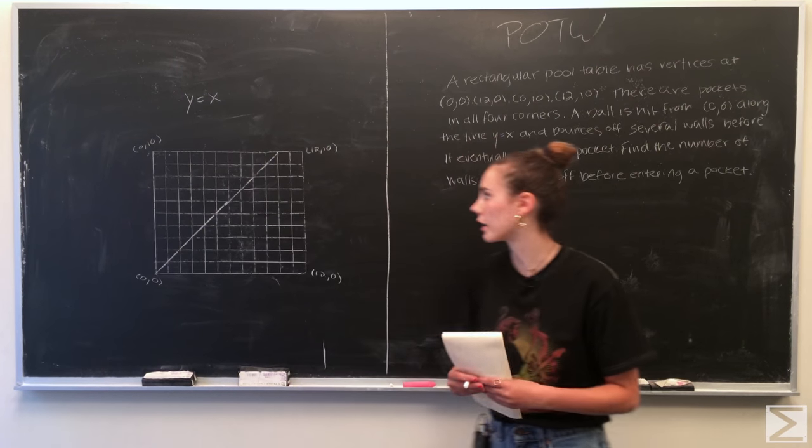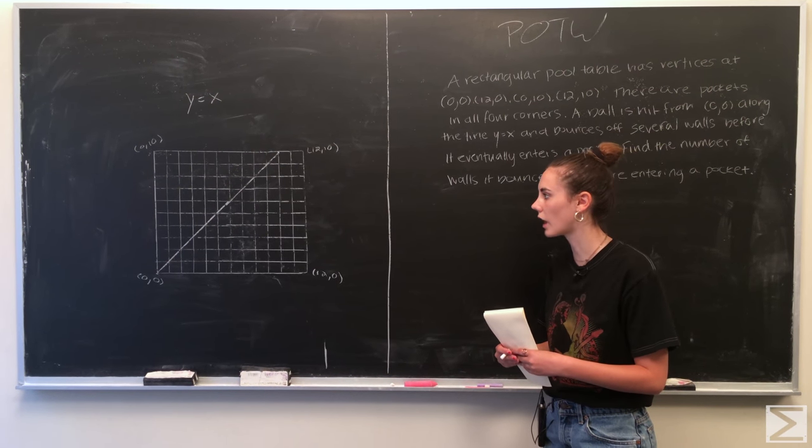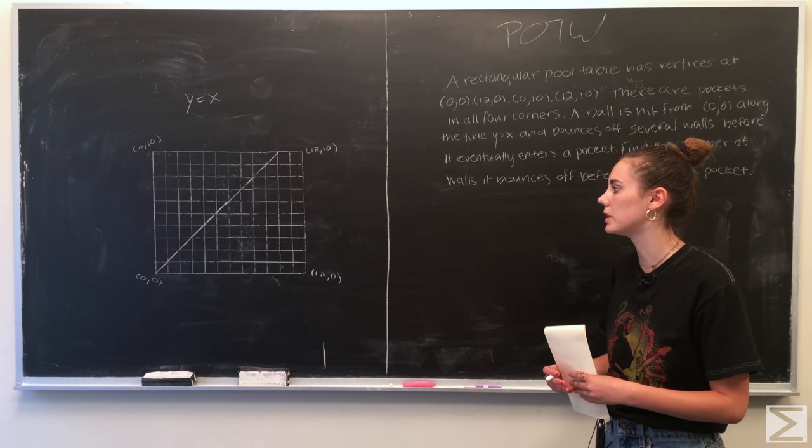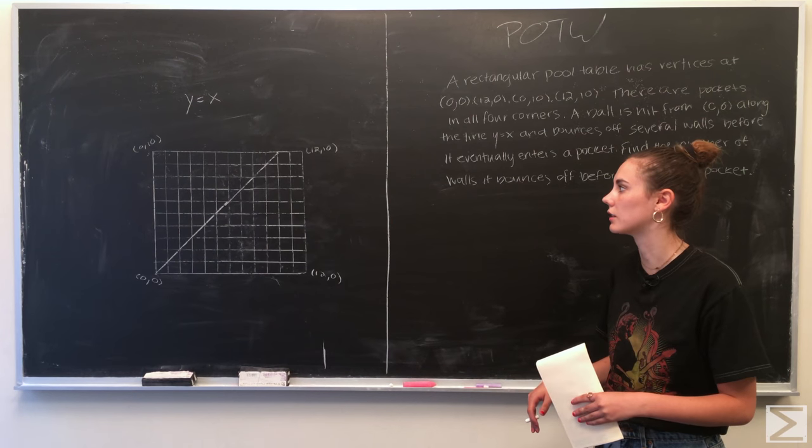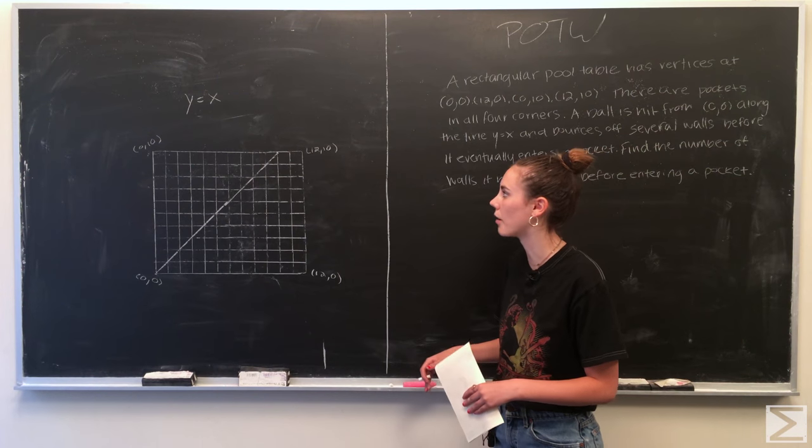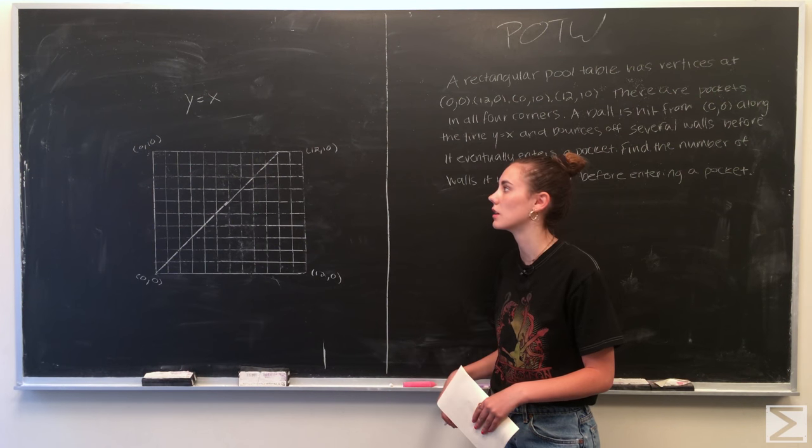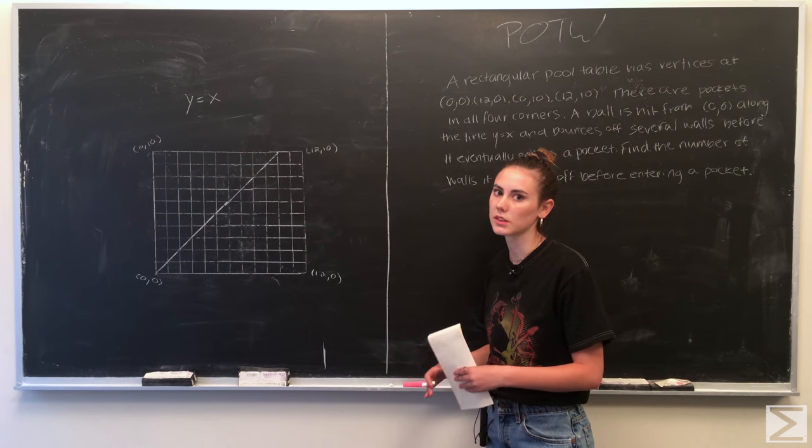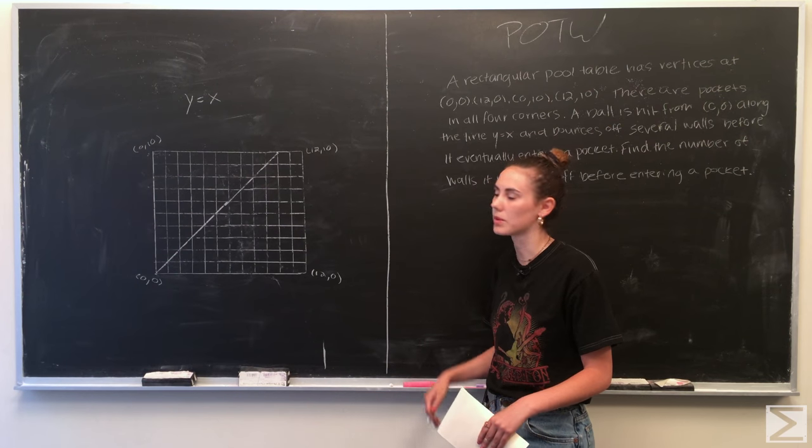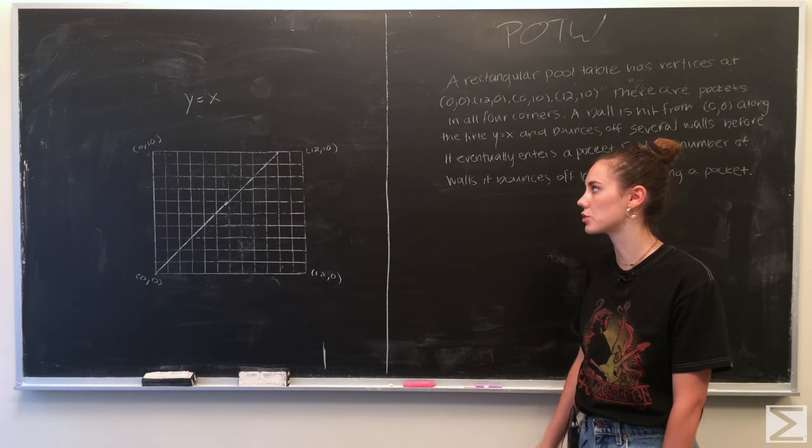So to begin, we've just drawn a quick little graph of what the pool table would look like. And there's actually a couple of ways to do this problem. Probably the easiest way would be to just use the same graph. And since the ball travels on the line y equals x, its reflection from hitting a wall is just y equals negative x. So using that, you can trace where the ball goes until it ends up in a pocket and count how many walls it hits. We're going to do it a little different way with some more visualization.